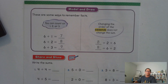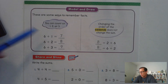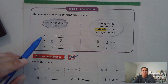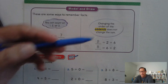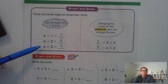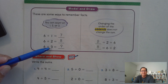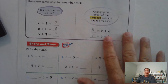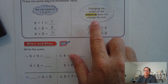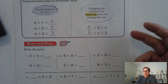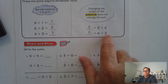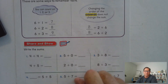Let's look at page 126 and practice some more. These are some ways to remember facts. We can count on one, two, or three. So if we have six and add one, six plus one means just count on: six, seven. Six plus two — count on two more: six, seven, eight. Six plus three — count on three: six, seven, eight, nine. Changing the order of the addends — the numbers we add — does not change the sum. So two plus six is the same as six plus two.